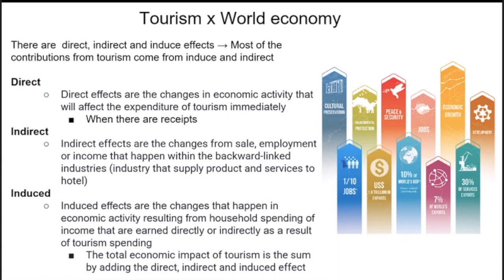There are direct, indirect, and induced effects of tourism. Most contributions from tourism come from the induced and indirect effects. The direct effect is changes in economic activity that affect tourism expenditure immediately — there must be proof of people coming, like receipts from the airport. Indirect effects are changes in sales, employment, or income within backward-linked industries — for example, vegetable producers who supply the hotel. Induced effects are changes in economic activity from household spending on income earned directly or indirectly as a result of tourism spending.